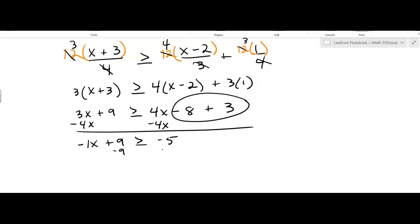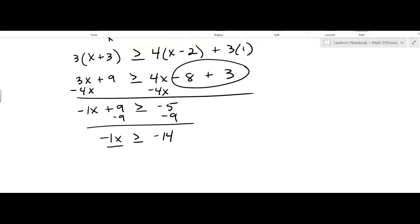Okay, subtract 9. So I'm getting negative 1x is greater than or equal to negative 14. Divided by negative 1. Okay, now I have to remember I'm dividing by a negative, so that's going to make it x is less than or equal to positive 14. So you still do the work there. A negative divided by a negative is positive.